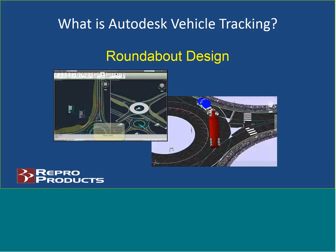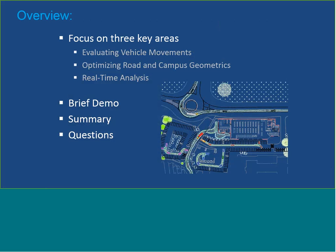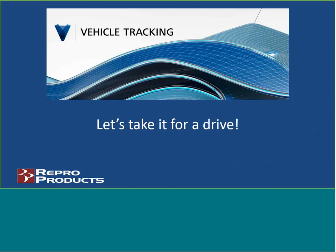We can combine roundabouts and swept path analysis together. So we've got three things to look at: evaluating vehicle movement through swept path analysis — can we fit a WB-67 into a loading dock, can the FedEx truck get into an office complex, or can I back my boat into the garage? We also have real-time analysis capabilities. As you move the vehicle around, you can see where it's going to go, the wheel tracks, the envelope, and we can even animate it. I'll give a brief demo of all this, then open up to questions.